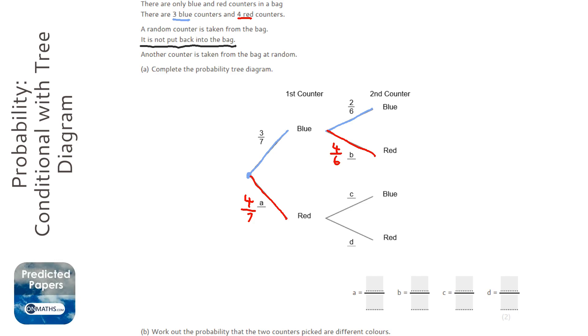That's because there are two blue counters and only six left altogether. So we need to know that to be able to fill out the bottom branch.